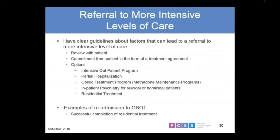Referring to more intensive levels of care goes back to the willingness component we've been discussing. Having clear discussions and clear guidelines between you and the patient so they understand: if this happens, we may need to consider alternatives for your safety and goal of recovery. Other levels of care include intensive outpatient programming, partial hospitalizations, opioid treatment programs — i.e., methadone maintenance programs — inpatient psychiatric facilities if they're expressing self-harm or harm-to-others, and even long-term residential facilities.